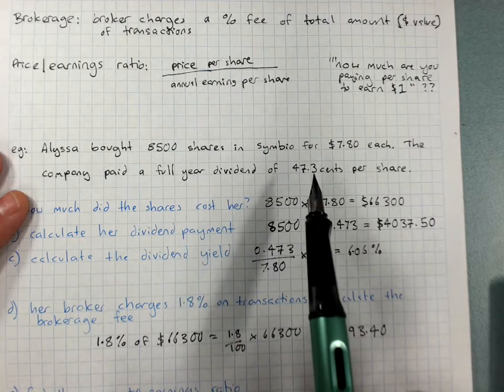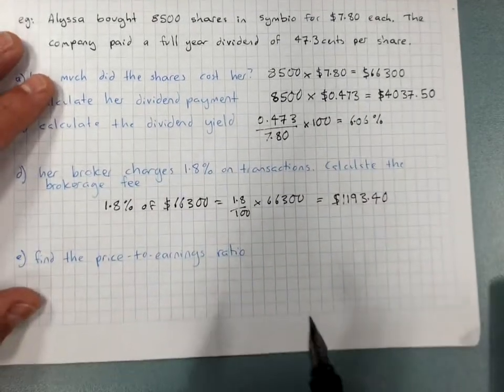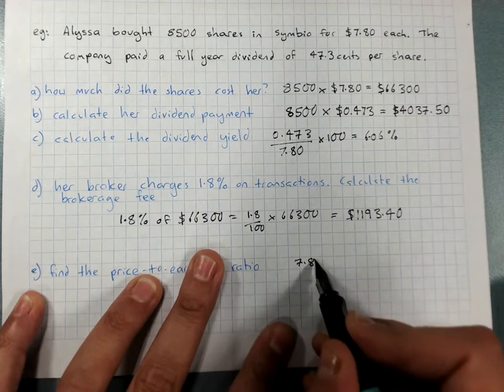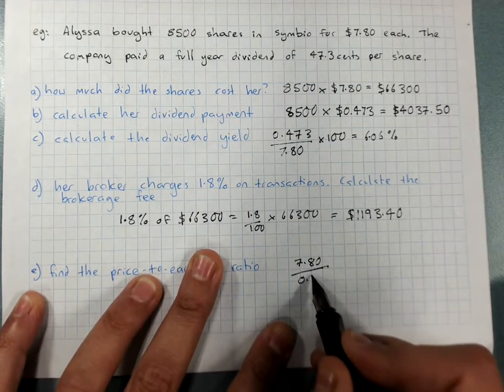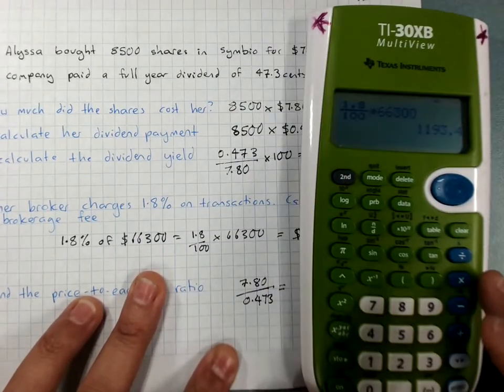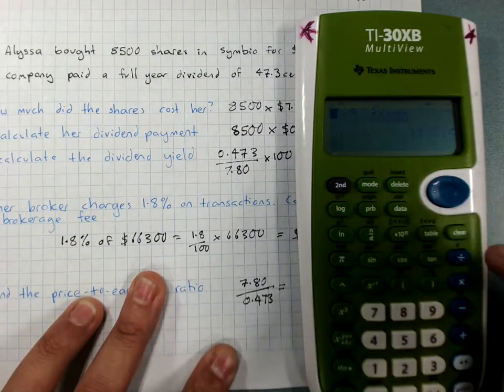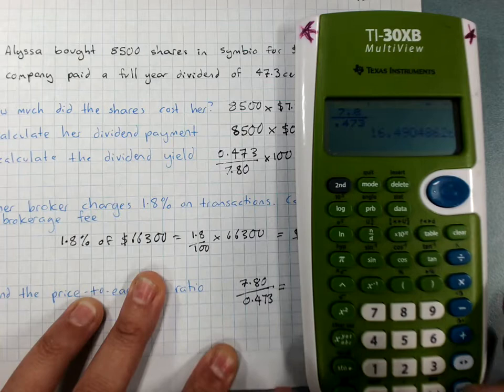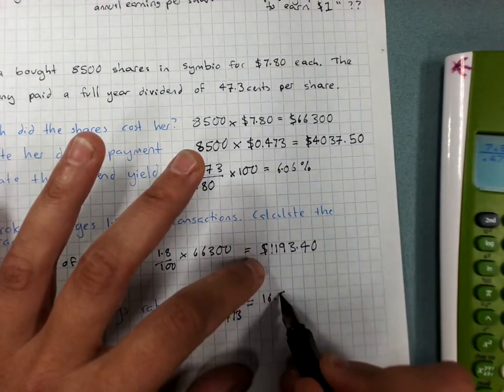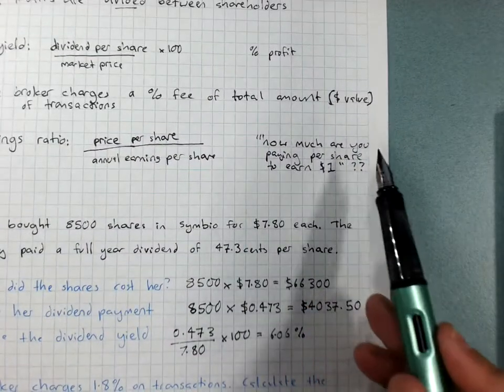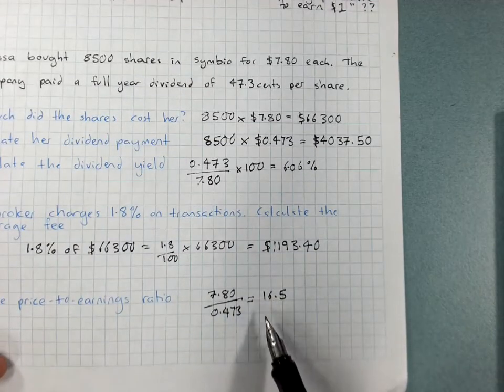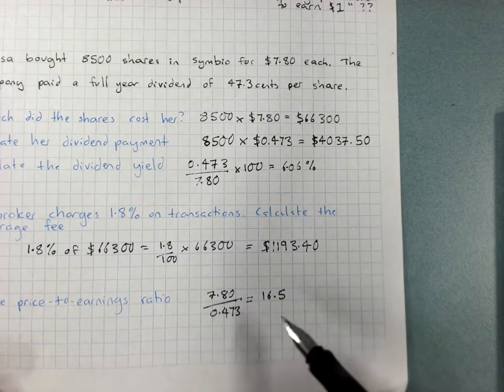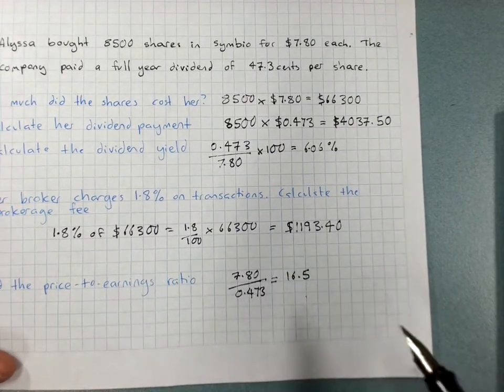The earnings there is a total of 47.3 percent. So remember, we've got to have them both in dollars. Price per share over earnings. So, oops, sorry, fraction 7.8 over 0.473. So, let's see, 16.49, might just go for 16.5. Now remember, that was saying how much you're paying per share to earn a dollar. So basically, 16.5 dollars being spent to earn one dollar. If we were comparing this with another set of shares, the higher number is a less good deal.